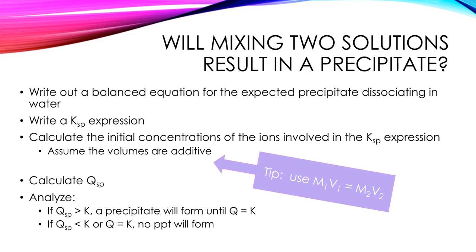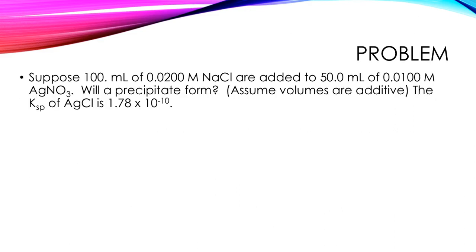So let's do one. A very typical problem of this type. Suppose 100 mL of 0.0200 M NaCl are added to 50.0 mL of 0.0100 M AgNO3. Will a precipitate form? We're going to assume that the volumes are additive. The problem did tell us this here. Sometimes they won't, but you do need to know what that final volume is in order to do these problems successfully.